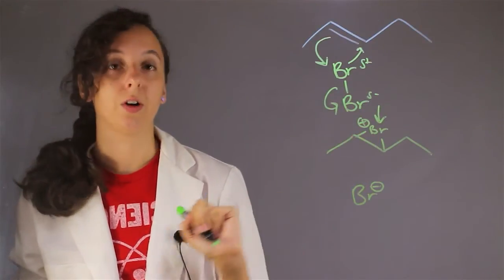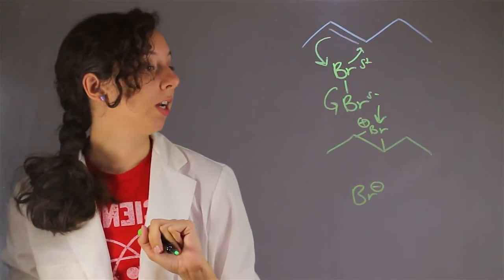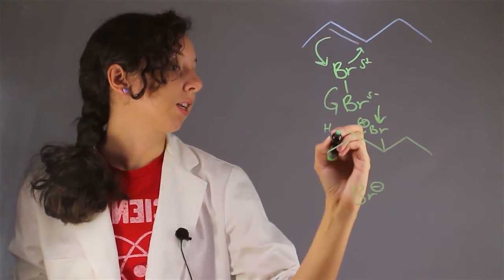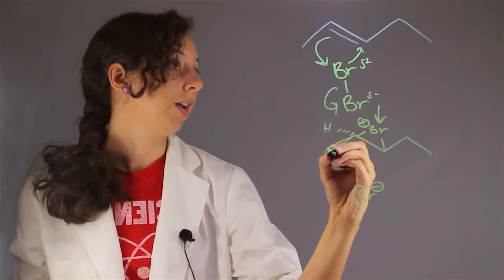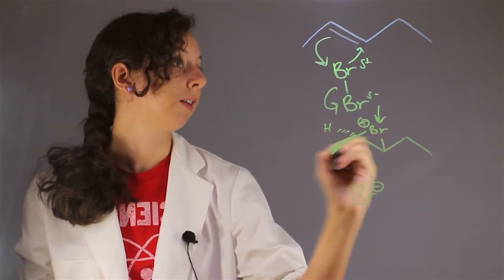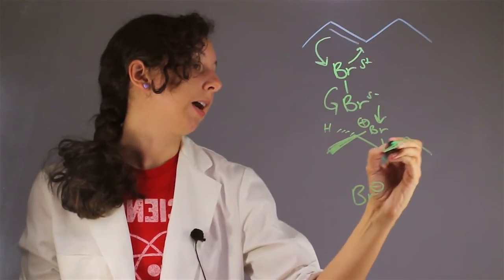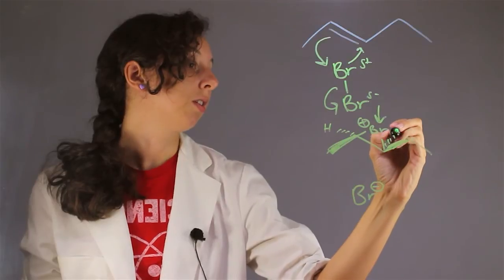And at this point, we start making some stereochemistry. So this hydrogen is actually going to be a dash. This is going to be a wedge. And then on the other side, you have this guy being a wedge. We're going to have a dash hydrogen.